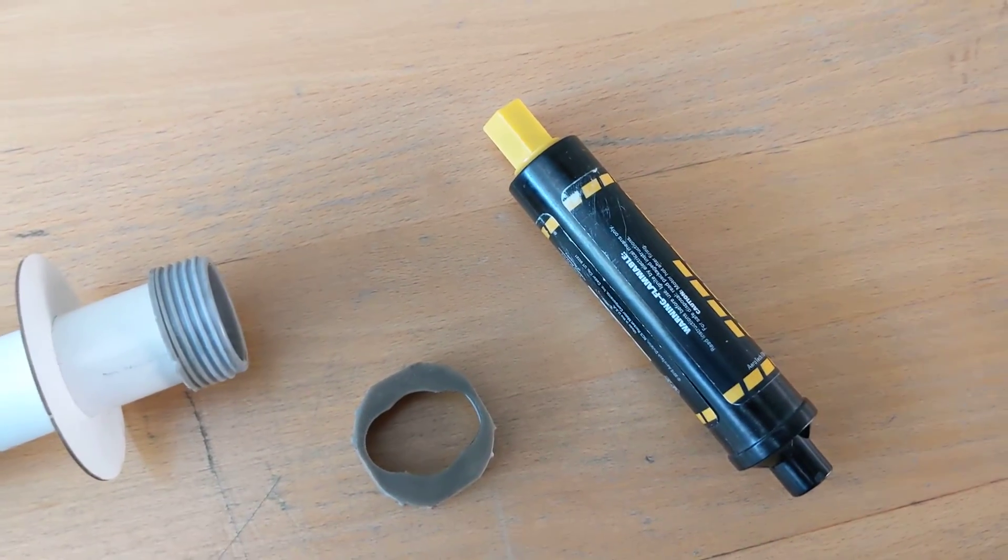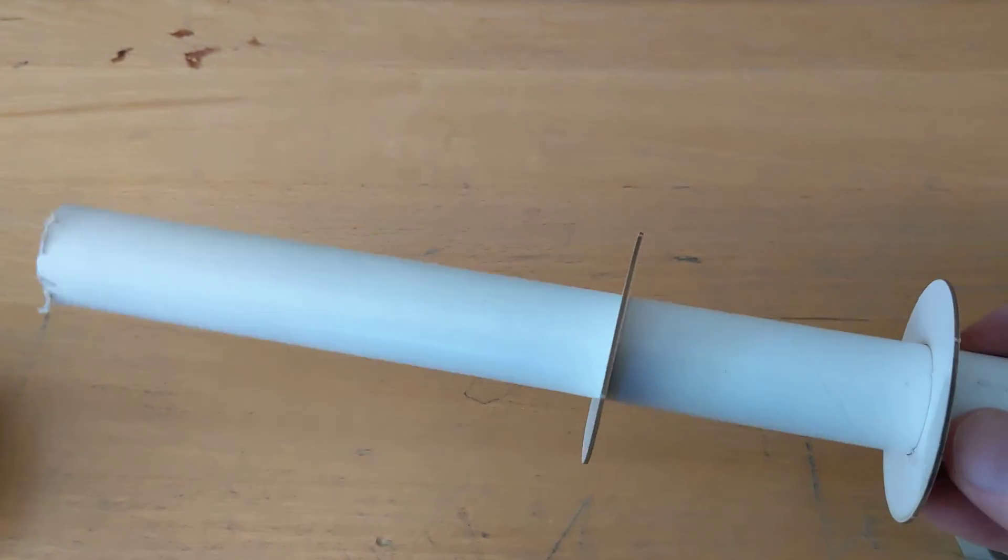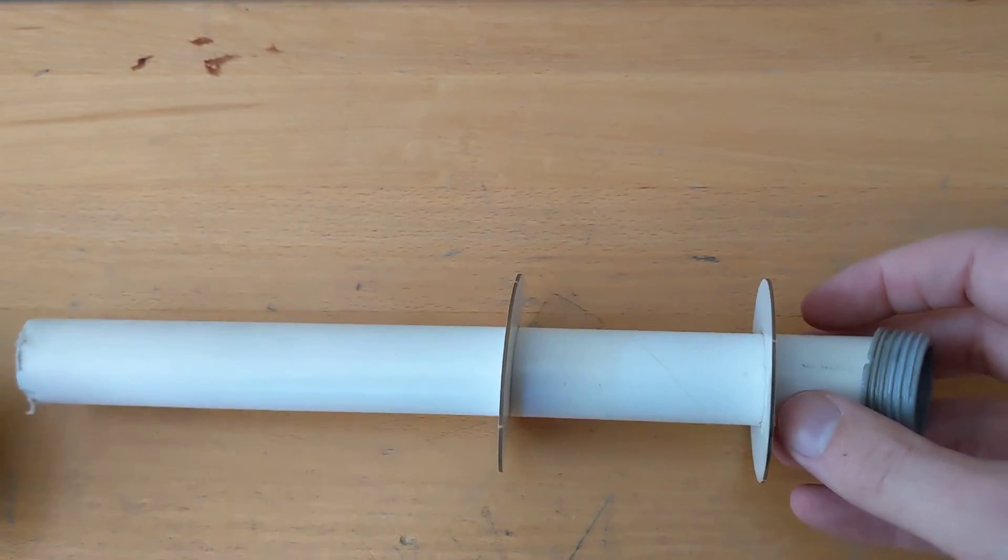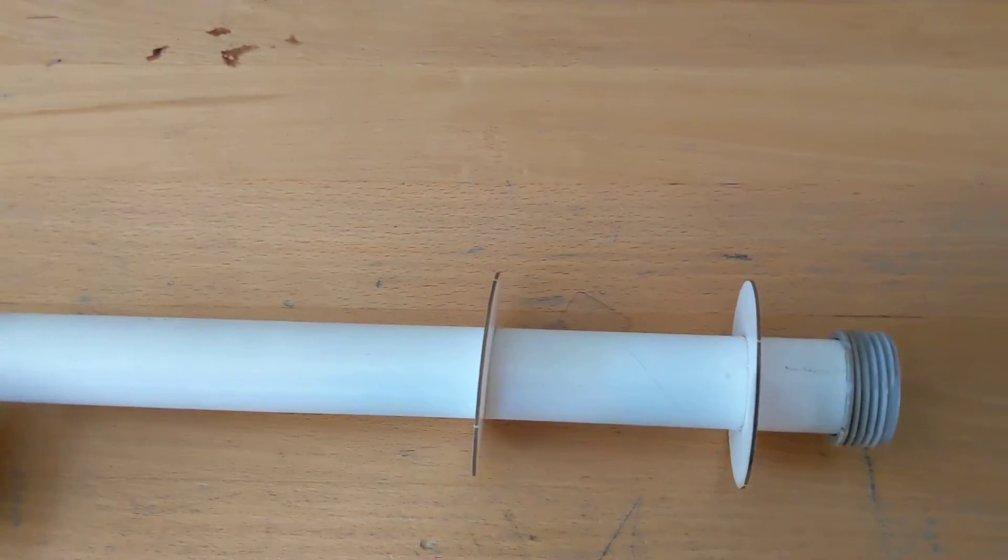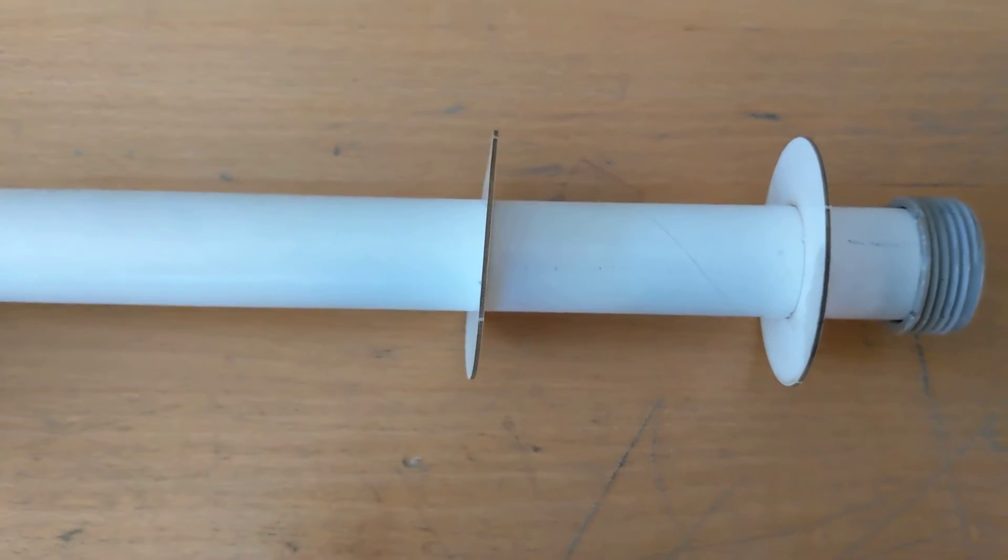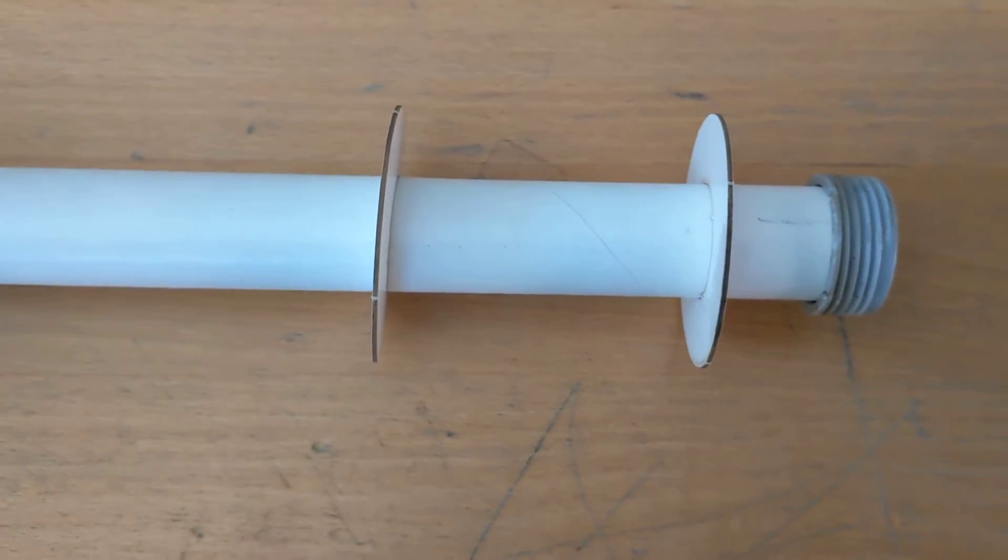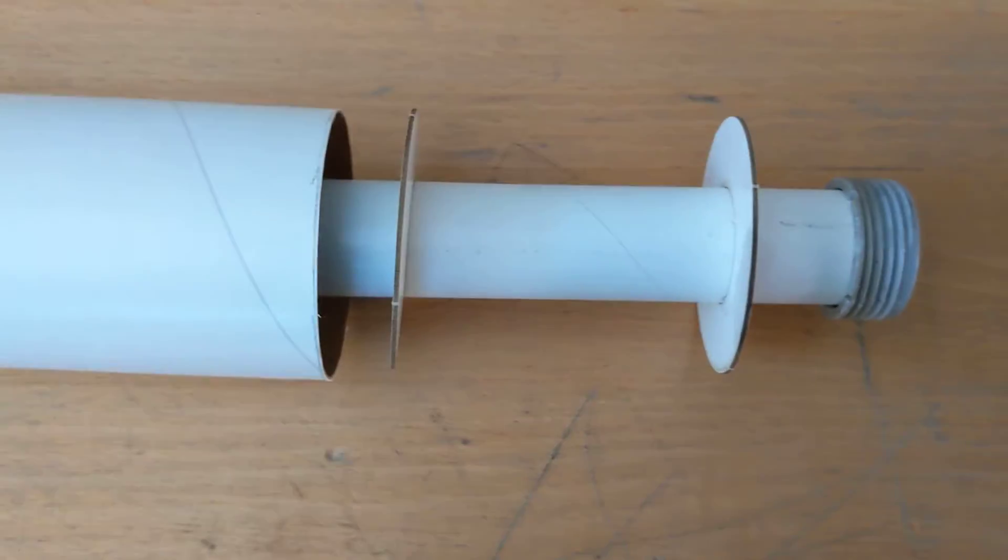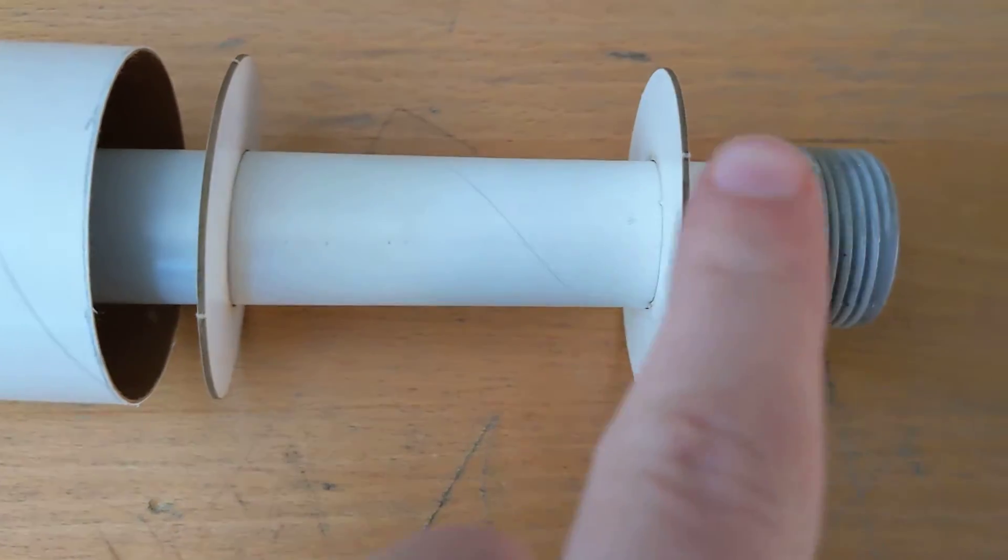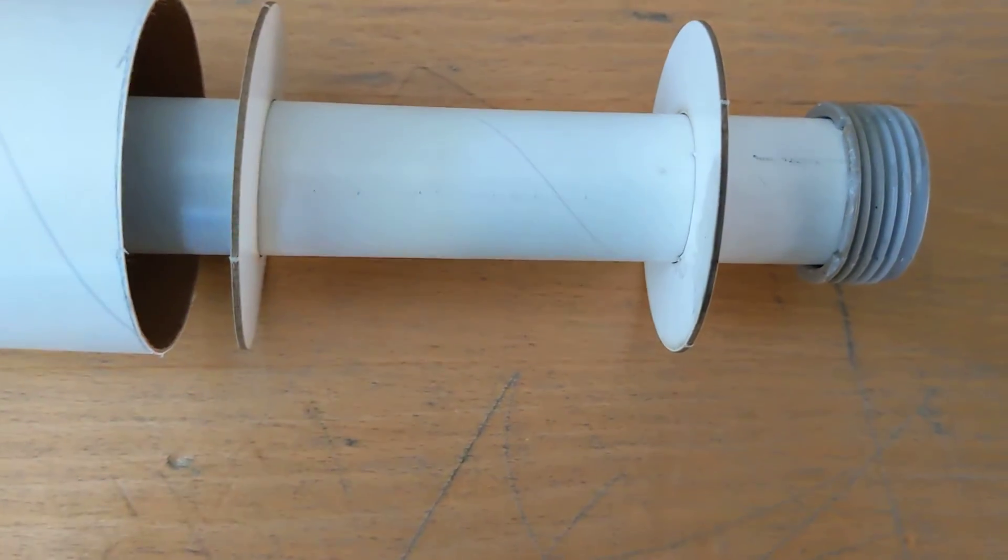So when you are putting your motor tube into your body tube, you want to make sure that you have your centering rings, and you're going to just epoxy those centering rings onto your motor tube. The motor tube then will be placed inside of your body tube. You'll want to put epoxy on the ring here and here on the outside, and slide it into your body tube.